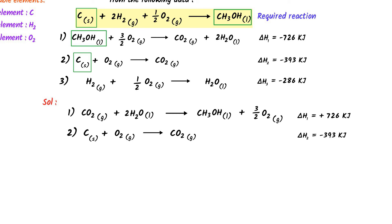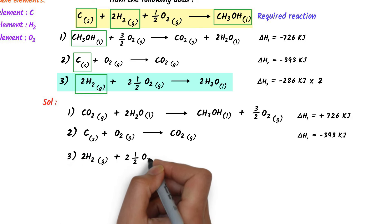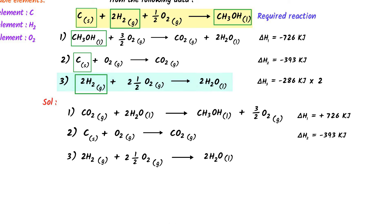Thirdly, in the required reaction there are two molecules of hydrogen gas at the left-hand side, while in the third reaction there is only one molecule of hydrogen gas. So I multiply this reaction by 2, and I also multiply its enthalpy change by 2. I get 2H₂ plus O₂ (combining the half-oxygen terms) and 2H₂O. Multiplying the enthalpy: 2 × (−286 kilojoule) = −572 kilojoule.